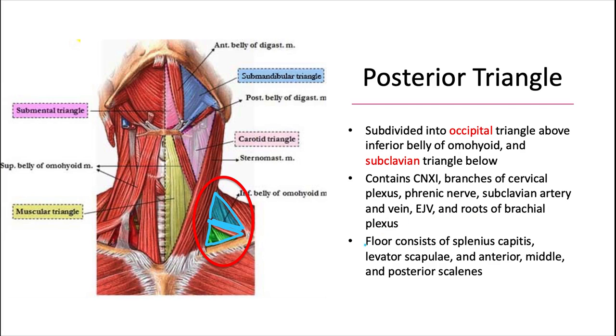The floor consists of several neck muscles, or I should say upper back muscles, and those are the splenius capitis, levator scapulae, and the anterior, middle, and posterior scalenes.